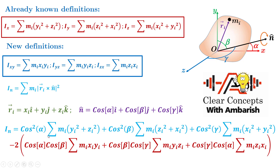After taking Σ mᵢ |Rᵢ × N-cap|² and rearranging, you get: cos²α · Σmᵢ(yᵢ² + zᵢ²) + cos²β · Σmᵢ(zᵢ² + xᵢ²) + cos²γ · Σmᵢ(xᵢ² + yᵢ²) minus 2 times [cos α cos β · Σmᵢ xᵢ yᵢ + cos β cos γ · Σmᵢ yᵢ zᵢ + cos γ cos α · Σmᵢ zᵢ xᵢ]. This is a cyclic expression, as expected from the symmetry of Rᵢ and N-cap.